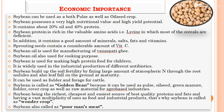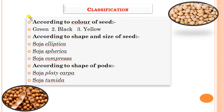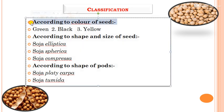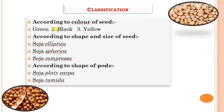Next, you can see the classification of soybean. According to color, there are three types: green, black, and yellow. According to shape and size of seed, types include Soja elliptica, Soja spherica, and Soja compressa. According to shape of pod, types include Soja platicarpa and Soja tumida.